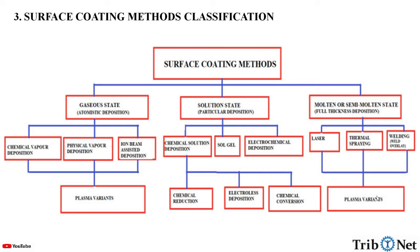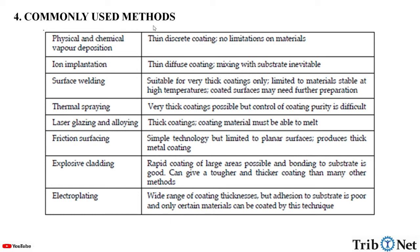Further, all these topics will be discussed in detail in the coming videos. Now, let us understand the commonly used surface coating methods. The first is physical and chemical vapor deposition, which enables thin discrete coatings with no limitations on materials. In ion implantation, a thin diffusive coating is produced where mixing with the substrate is inevitable. Surface welding is suitable for very thick coatings only, limited to materials stable at high temperatures, and coated surfaces may need further preparation. Thermal spraying allows very thick coatings, but control of coating purity is difficult. Laser glazing and alloying can form thick coatings, but the coating material must be able to melt. Friction surfacing is a simple technology but limited to planar surfaces and produces a thick metal coating. In explosive cladding, rapid coating of large areas is possible, bonding to the substrate is good, and it can give a tougher and thicker coating than many other methods. In electroplating, there is a wide range of coating thickness, but adhesion to the substrate is poor and only certain materials can be coated by this technique.